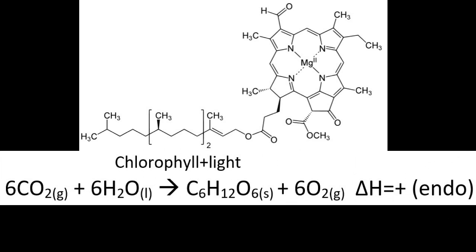That's a molecule of chlorophyll, which is the green pigmentation in leaves, plants, and algae. Chlorophyll has conjugated bonds, which means there are single, double, single, double, etc. carbon-to-carbon bonds throughout the molecule. What that means for a conjugated molecule is that it will absorb visible light.